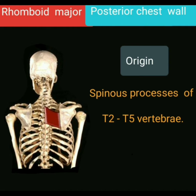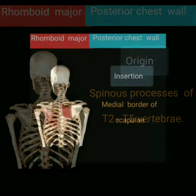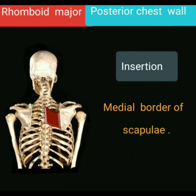Origin: the rhomboid major muscle originates from the spinous processes of thoracic 2 to thoracic 5 vertebrae. Insertion: the rhomboid major muscle is inserted into the medial border of the scapula.